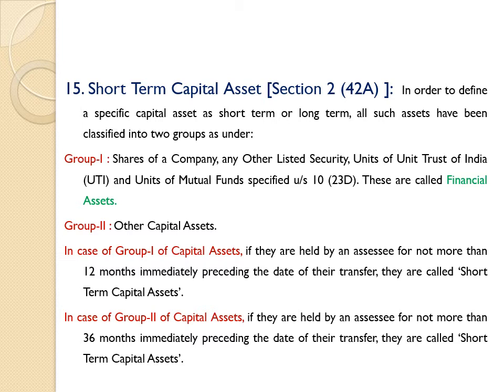Group 1 includes shares of a company, any other listed security, Units of Unit Trust of India, and Units of Mutual Funds specified under Section 10, Clause 23D. These are called financial assets. Group 2 covers other capital assets — that is, assets not covered under Group 1. Hence, financial assets come under Group 1 and other capital assets come under Group 2.